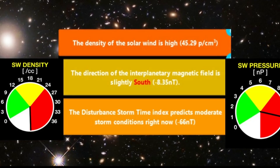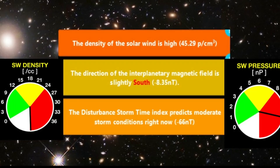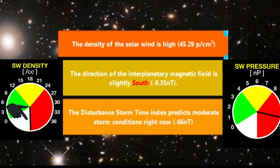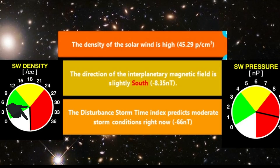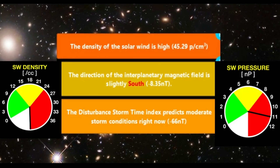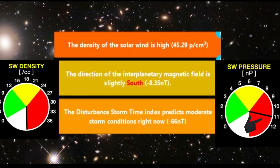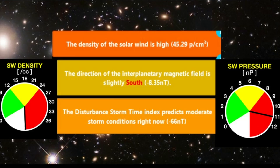The dial on the left shows the density of the solar wind — as you can see, the gauge is maxed out. The dial on the right shows the pressure of the wind, which is showing the pressure up in the red range.